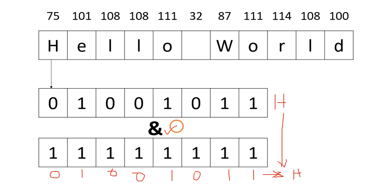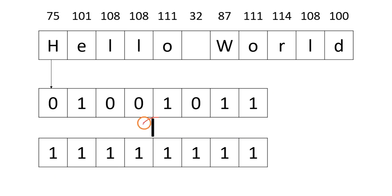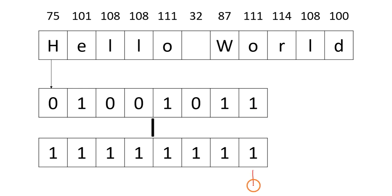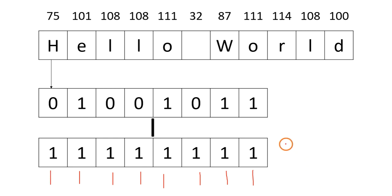The next operation is OR. How OR works: if at least one of the bits is one, the result will be one. So this is 1 1 1 1 1 1 1 1 — all ones. The output you will get is a garbage value, or sometimes a non-printable character, for the OR operation.